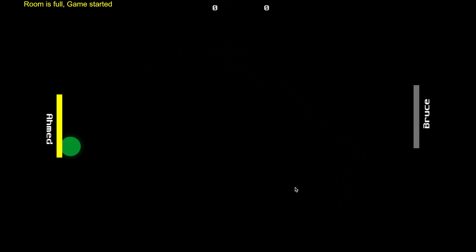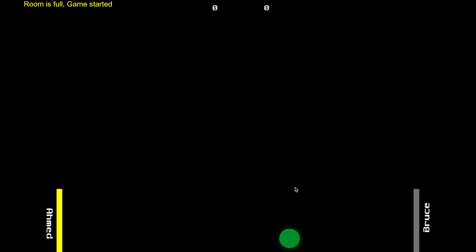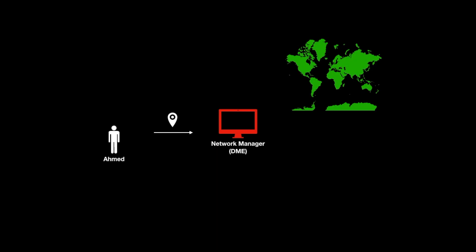Now let's go deeper and understand what happened after I pressed start game. When I press start game, I sent a request to the network manager with my location. The network manager will find the closest server to my location. Once the server is found, the connection between me and the server will be initiated.